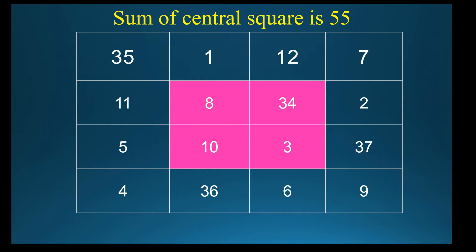Next, you take central square, that is pink square. What are the numbers? 8, 34, 3, 10. Add. How much you got? Is it 55? Correct. It should be 55.